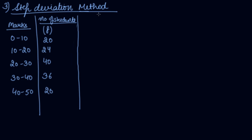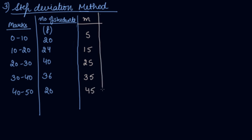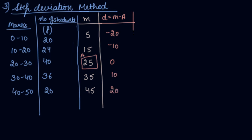Now we solve the same question using the step deviation method. Take the mid-values again: 5, 15, 25, 35, and 45. Take the assumed mean as 25, and find the deviations M − A: −20, −10, 0, 10, and 20. The common factor C is 10 (since the class width is 10). Divide each deviation by C to get D': −2, −1, 0, 1, and 2.